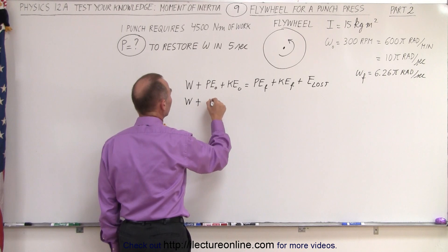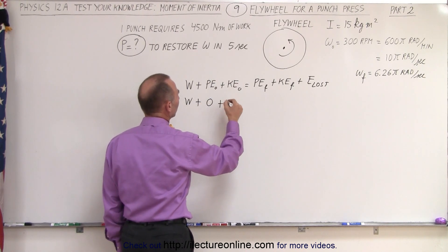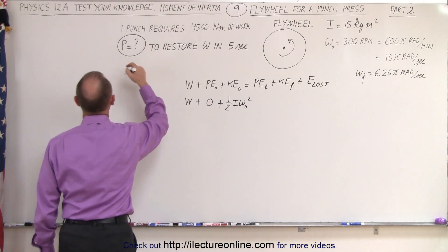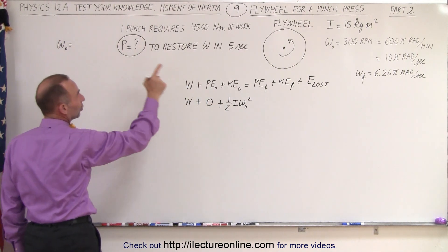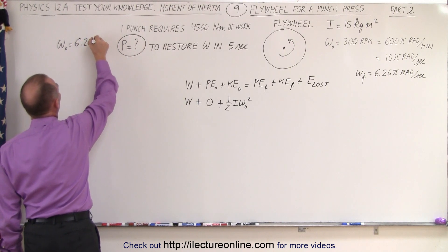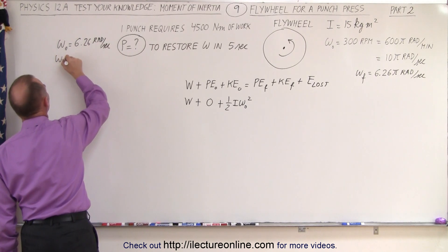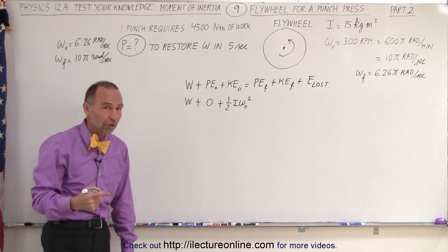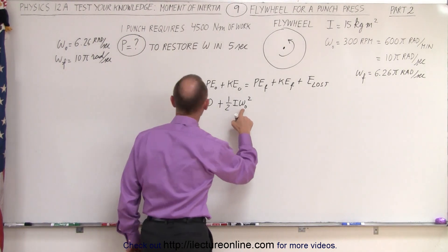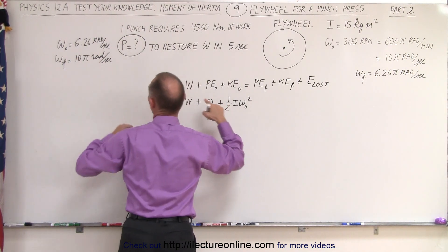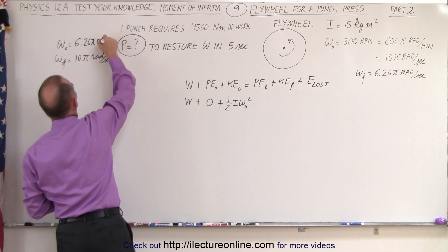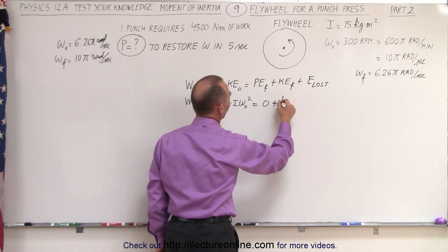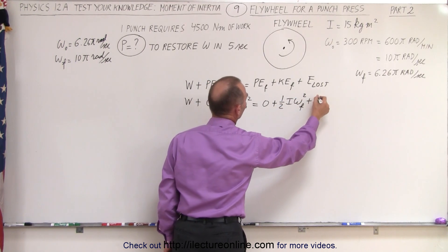So we have work put in, plus zero initial potential energy, plus the original kinetic energy one half i omega initial squared. Notice for this part, omega initial is 6.26 pi radians per second—I'm missing a pi here—and omega final is back to 10 pi radians per second. That equals zero potential energy final, plus one half i omega final squared, plus zero energy lost.